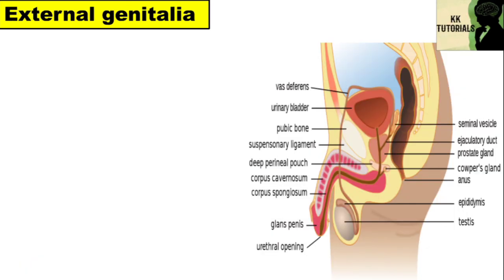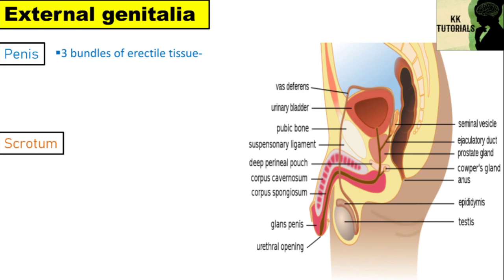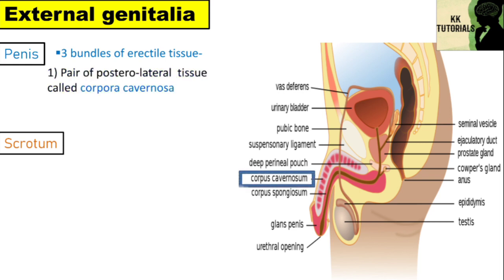External genitalia of the male reproductive system includes the penis and the scrotum. The penis is the male copulatory organ. It is cylindrical and muscular with three bundles of erectile tissue: a pair of posterolateral tissues called corpora cavernosa and a median corpus spongiosum.